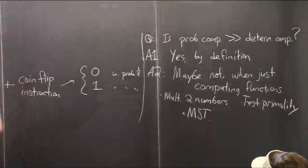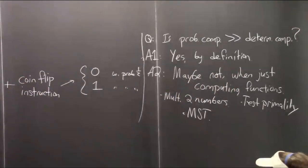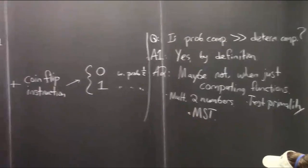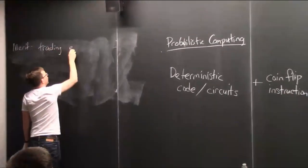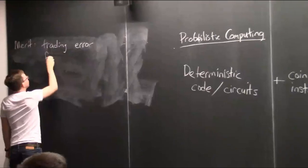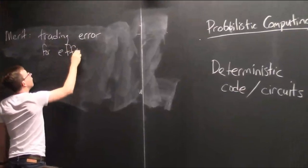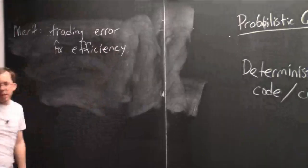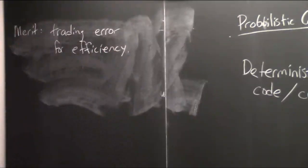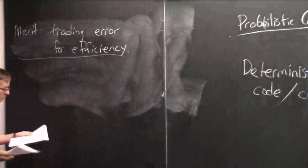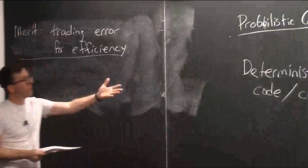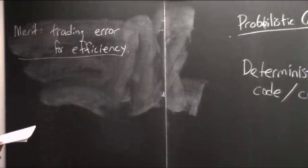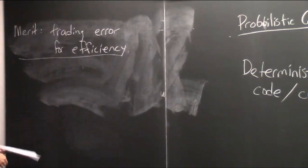So the dream for why you might want to use probabilistic computing — the potential merit — is trading failure probability or error for efficiency. This is what you may hope for with probabilistic computation. And it turns out, as you probably already know, that you can do this sometimes — get a fairly big speed-up for a basic computer function problem, while only having 2 to the minus 500 chance of error.